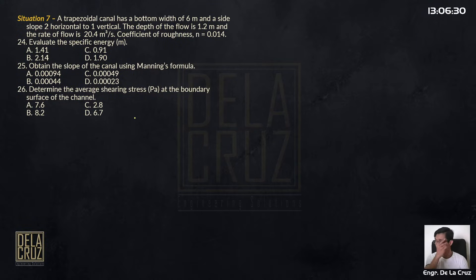A trapezoidal canal has a bottom width of 6 meters and a side slope of 2 horizontal to 1 vertical. The depth of flow is 1.2 meters and the rate of flow is 20.4 cubic meters per second. The coefficient of roughness is 0.014.